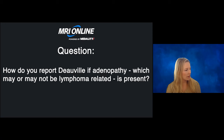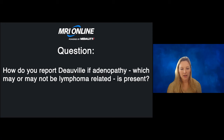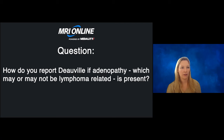Somebody asked how to report Deauville if adenopathy is present which may or may not be lymphoma-related. With the Deauville criteria there are five categories, and then there's an X qualifier. If I think a finding is not related to lymphoma but is very FDG avid — for example thyroiditis — you can give it a designation of Deauville X, meaning it's very avid and abnormal but not thought to be lymphoma-related. You can use that for lymph nodes too if you think they're not related to lymphoma, but you have to be very careful about attributing an FDG-avid lymph node to a non-lymphoma cause in a patient with suspected or known lymphoma.